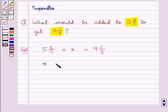To find out the number x, we need to subtract 5 3 upon 7 from 9 1 upon 3. That is x would be equal to, now 9 1 upon 3 can be written as 28 upon 3 minus 5 3 upon 7 can be written as 38 upon 7.